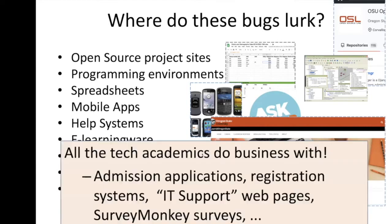As academics, maybe we can relate to this. All the tech we academic people do business with — these inclusivity bugs are there. Admission applications, registration systems, IT support, web pages, Survey Monkey surveys. Have you ever run across any of these things and been frustrated, saying why, why, why?